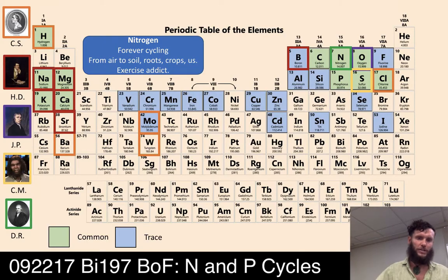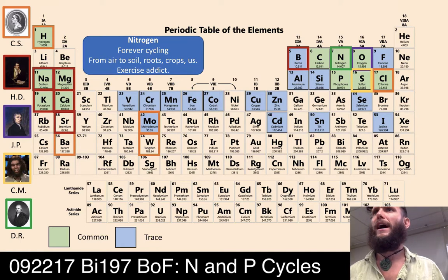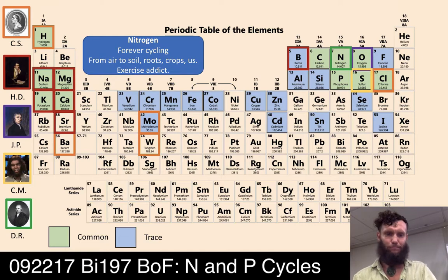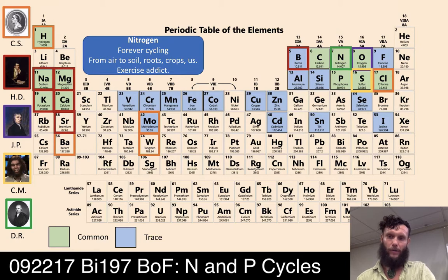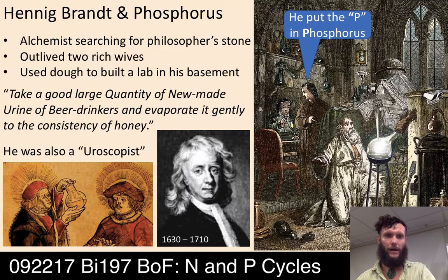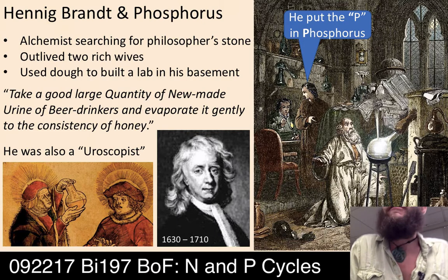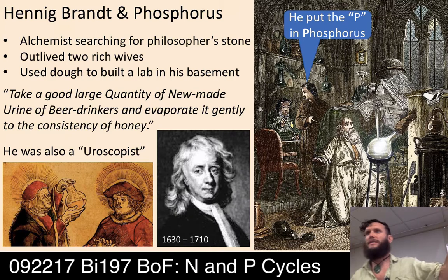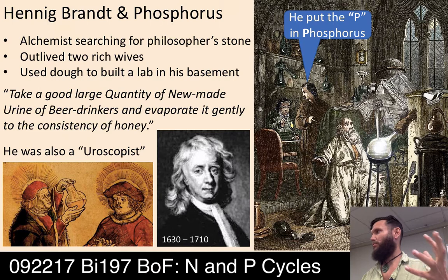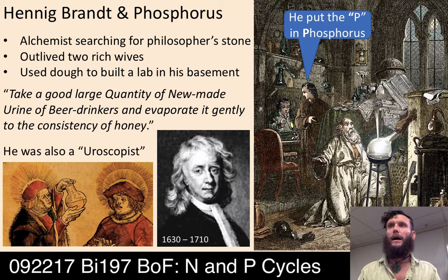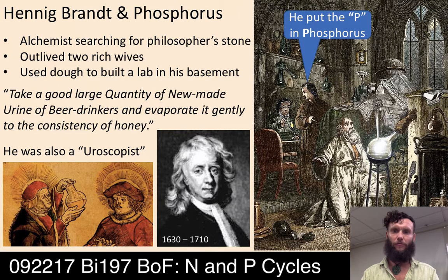So that's nitrogen — forever cycling from air to soil, roots, crops, and us. We'll put Daniel Rutherford up with a green box around nitrogen as we walk across the periodic table. Now we're moving to phosphorus. Carbon, nitrogen, and phosphorus — the CNP Redfield ratio — were identified as the three most important elements.